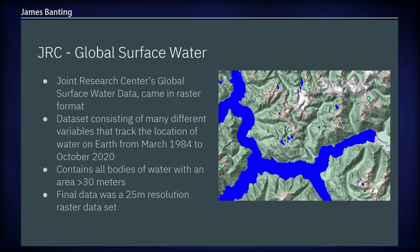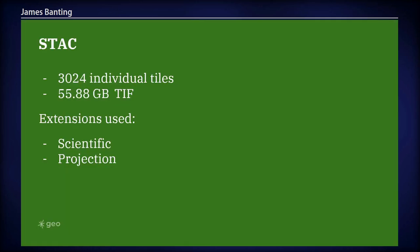This data set came in raster tiles. There were 3,024 individual tiles in total, totaling 55.88 gigabytes — a lot of tiles to manipulate and build out. We put up a STAC project for this, a STAC package. If you were in Pete's talk earlier, he mentioned where you can find these. We used the scientific and the projection extensions to describe this. The scientific extension allows us to hook up papers published on this data set, so we can reference the DOI number so people could go back and find the provenance of that data. We also added the projection data because we didn't want to manipulate any of the data sets too much before giving it to the user, so we described it in its native projection system.